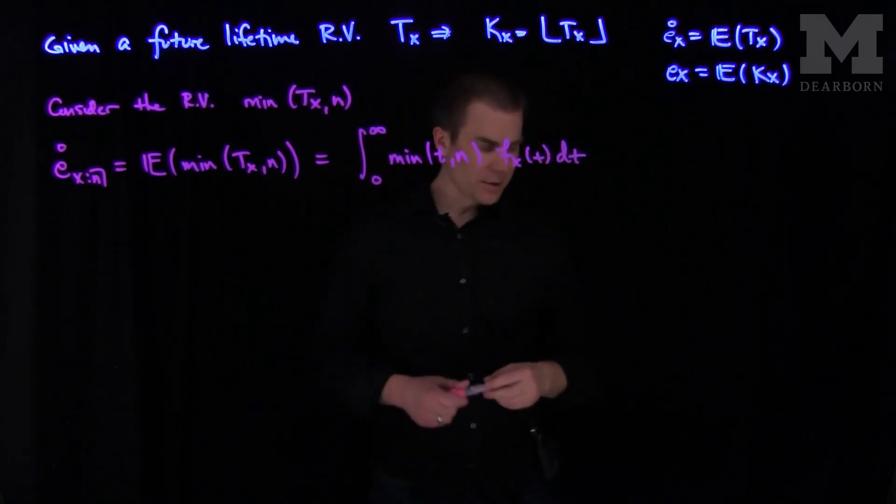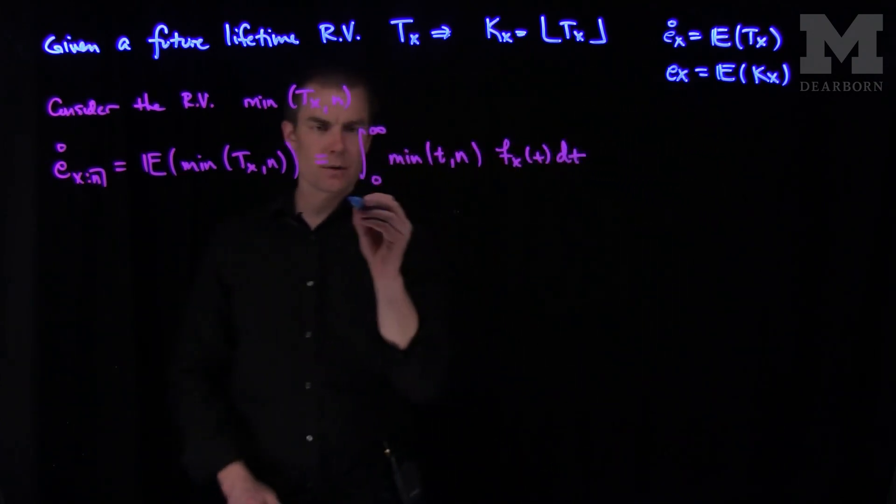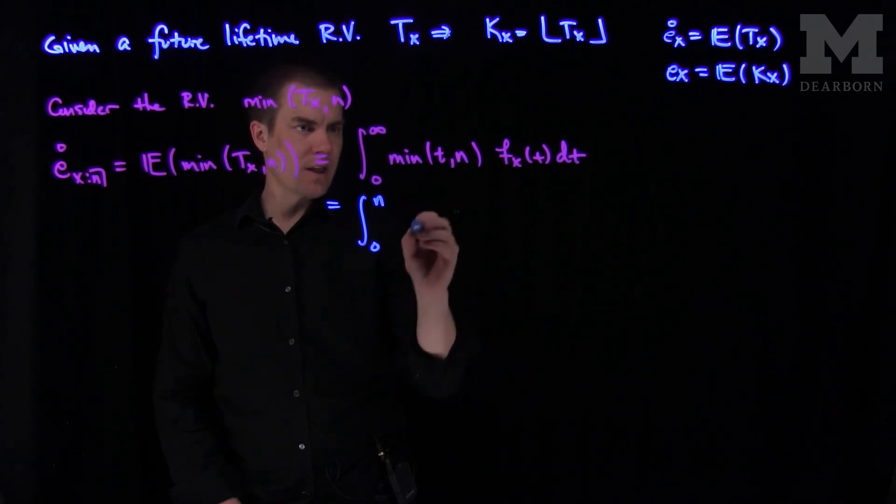And so what we'll do is we'll break this integral into two parts. So what we'll have over here is the first part of this integral will be the integral from zero up to n. And then between zero and n, the minimum is t.